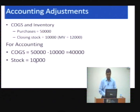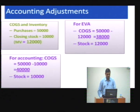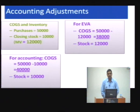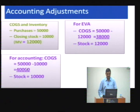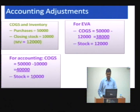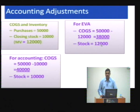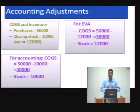For EVA, the market value is taken for COGS and inventory. So while accounting takes COGS as 40,000, for EVA the COGS is taken as 32,000 because of inventory valuation. Accounting takes stock as 10,000 whereas EVA takes stock as 12,000. Higher stock and lower profit result from the accounting adjustment for COGS and inventory.